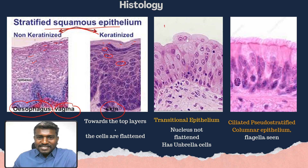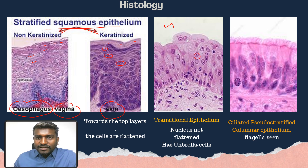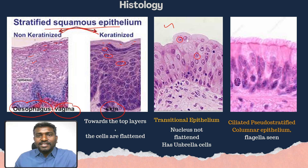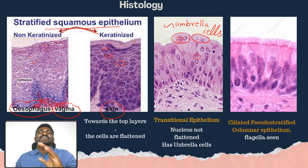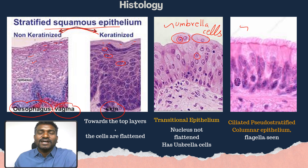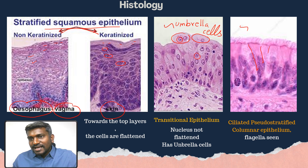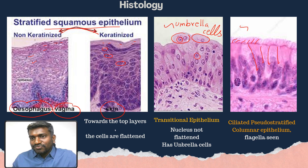This is the transitional epithelium — the nuclei are all the same size, not flattened, and it has large cells called umbrella cells. Umbrella cells are classically seen in transitional epithelium. The next image shows ciliated pseudostratified columnar epithelium — it has a single cell layer with cilia (flagella) at the top. If you see flagella at the top layer, that is pseudostratified columnar epithelium.